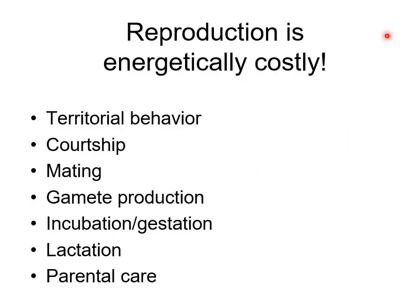Reproduction is very closely associated with energy balance. Why? Because reproduction is so energetically costly. If we just take species like birds and mammals, they show a variety of costly behaviours even before they get started: territorial behaviour, courtship behaviour, mating, then gamete production itself, then incubation or pregnancy in birds and mammals respectively, and in mammals lactation which is heavily energy demanding.